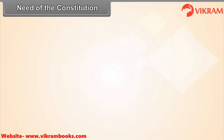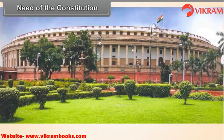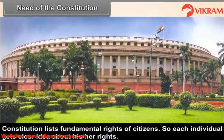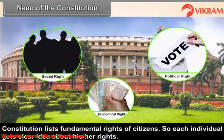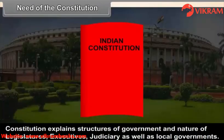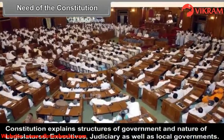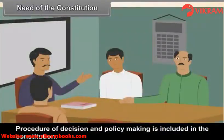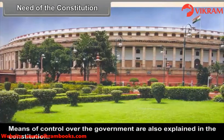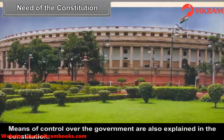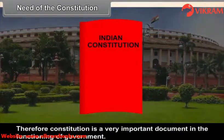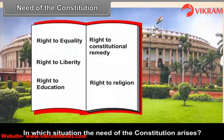Need of the Constitution. The Constitution lists the fundamental rights of citizens, so each individual gets a clear idea of his or her rights. It explains the structure of government and the nature of the legislature, executive, judiciary, and local governments. The procedure of decision and policy making is included in the Constitution. Means of control over the government are also explained. Therefore, the Constitution is a very important document in the functioning of government. In which situations does the need for a Constitution arise?